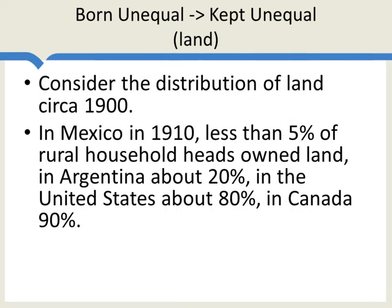The elites were successful at doing this. Let's think about the distribution of land circa 1900. In Mexico in 1910, less than 5% of rural household heads owned land. In Argentina, about 20%. Compare the United States — about 80% of rural households owned land in 1900. In Canada, it was 90%.